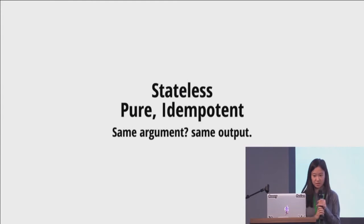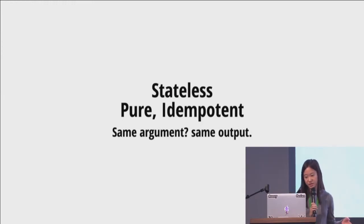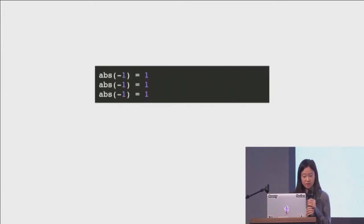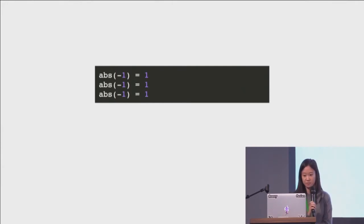Stateless functions, or pure functions — which just means no matter how many times the same function is called, if you pass in the same argument then the output should be the same. Let's think about the absolute function in math, which calculates a number's distance to zero. You give it the same number three times and you get the same output back.